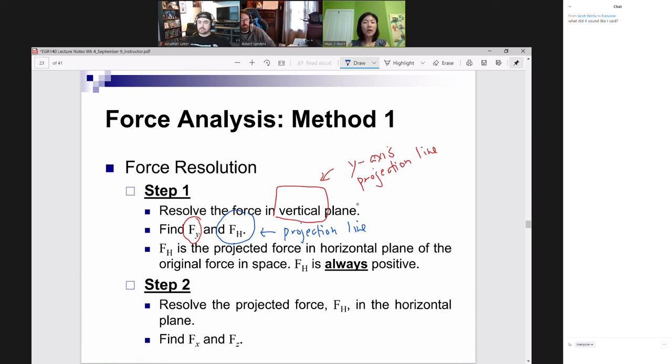So F sub h will always, always be on the projection line. And this value always has to be positive, because your projection line does not have positive or negative. It's just an image on the floor.